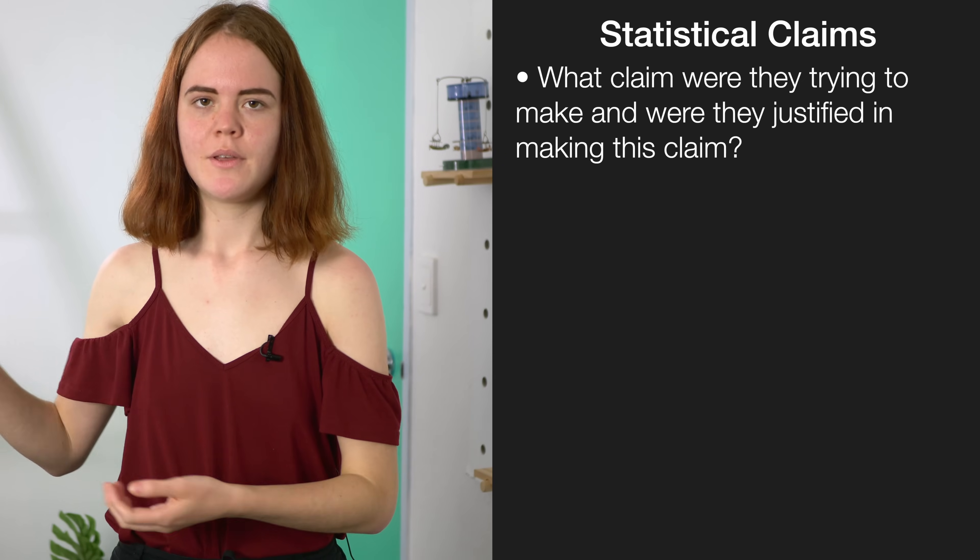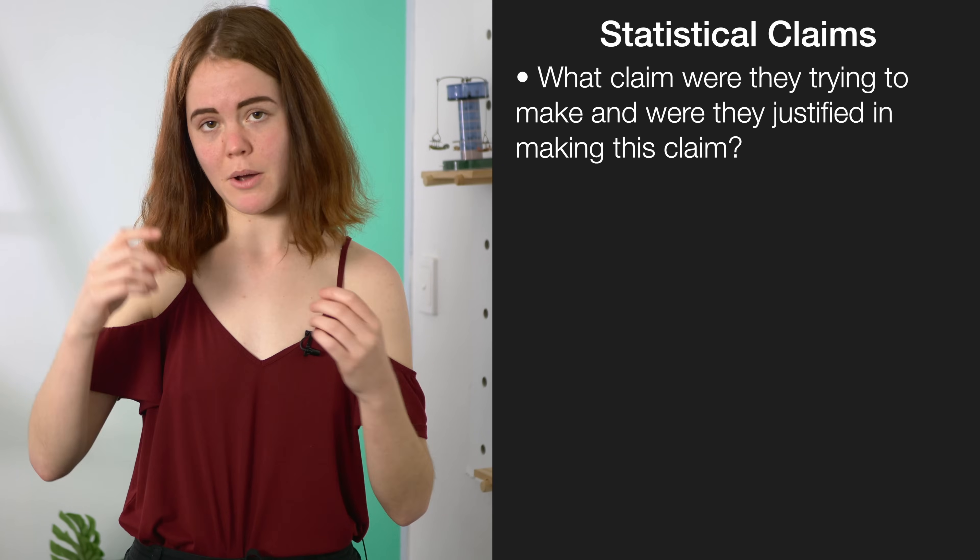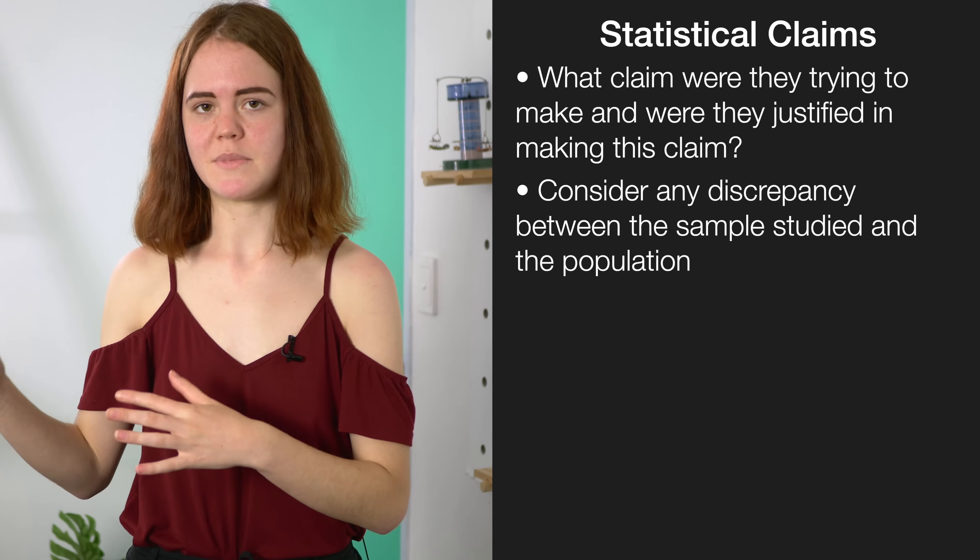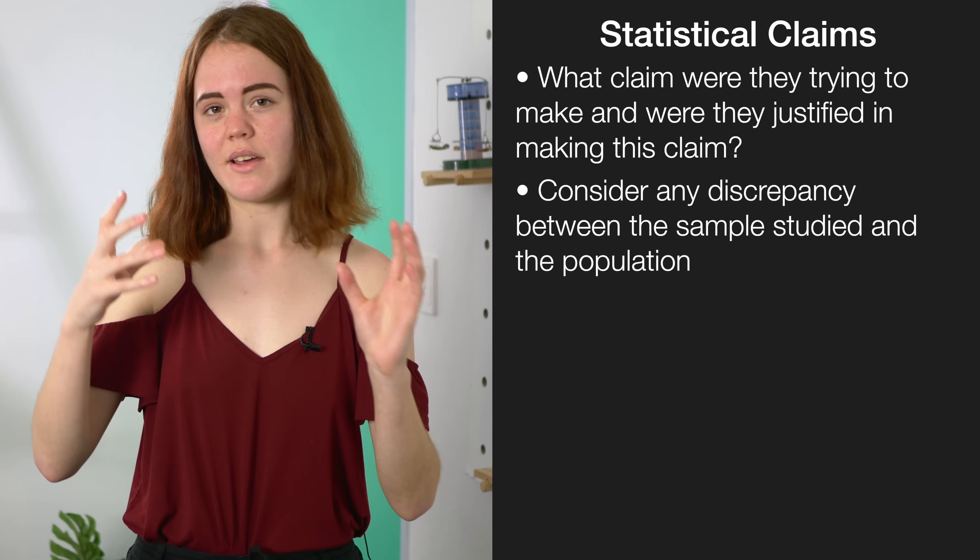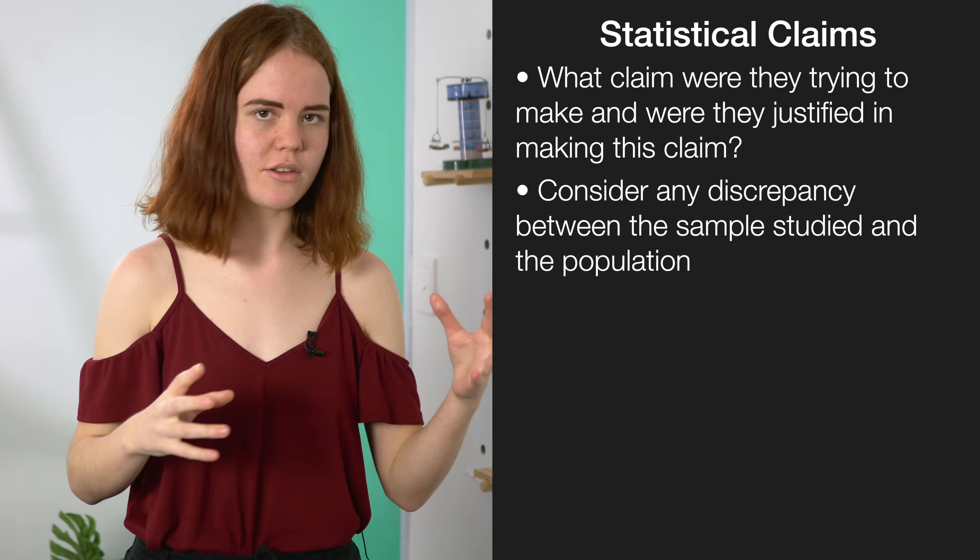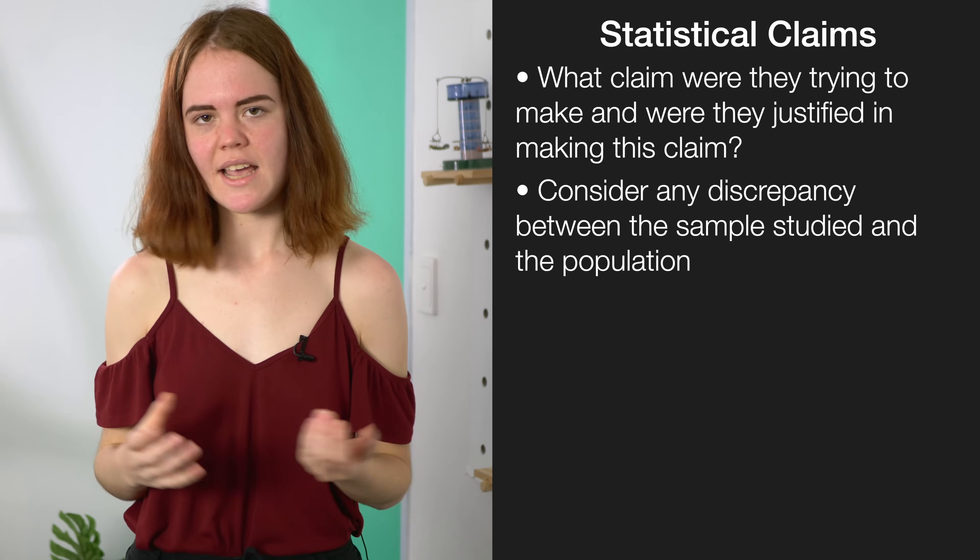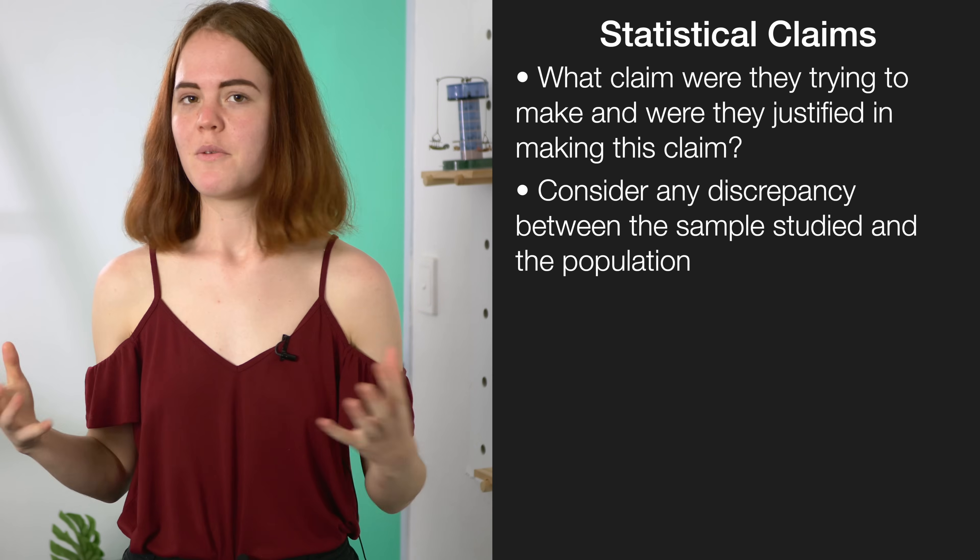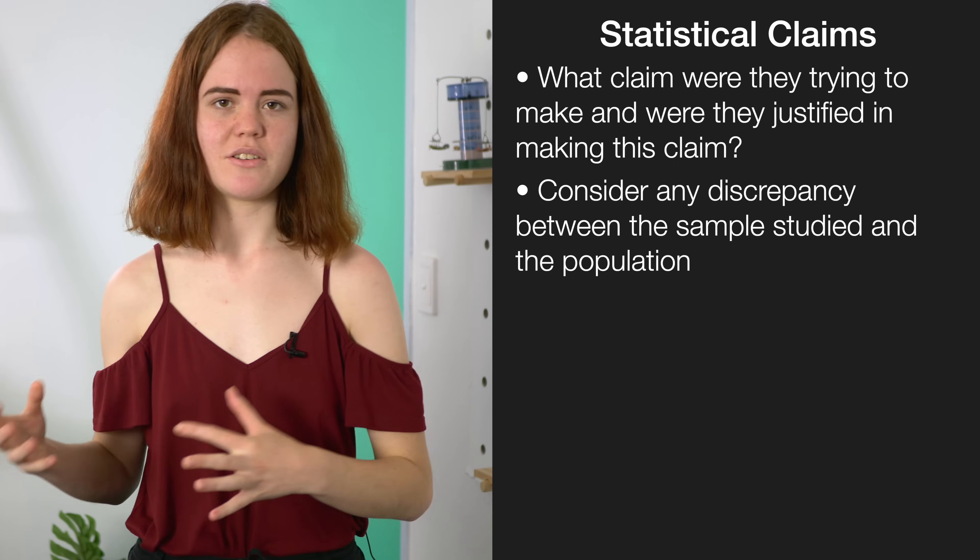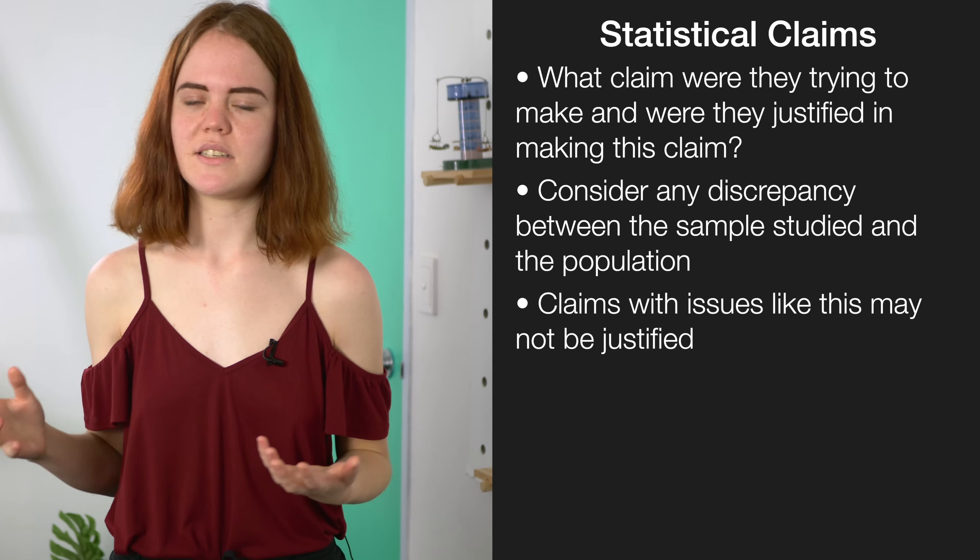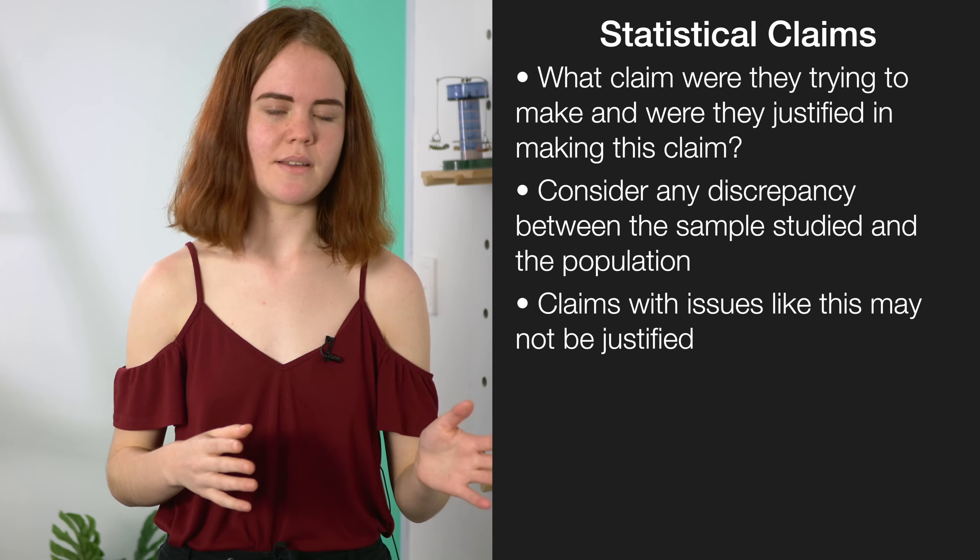The first thing to think about when evaluating a statistically based report is what claim were they trying to make and were they justified in making that claim. A good example is looking at the population that was actually studied versus the population the experiment is trying to make claims about. For example, are they trying to look at all year 13 students or only year 13 students in Wellington? If the experimenter claims that 60% of students overall like study time but the experiment only surveyed year 13 students in Wellington, their sample doesn't match the population they're making a claim about, so their claim isn't justified. It might seem like a small difference but has really big implications.